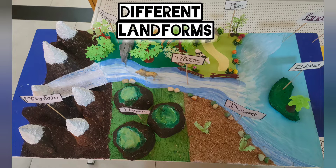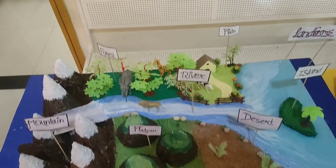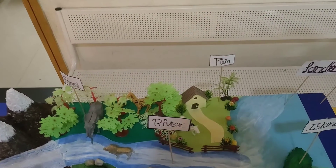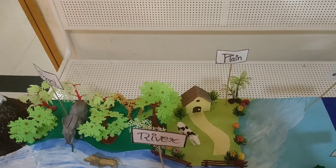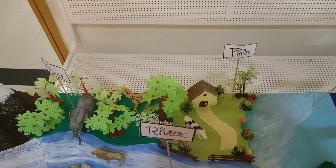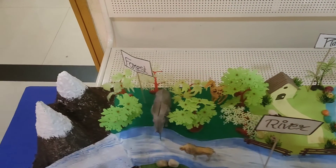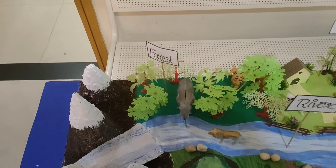Hello everyone, today we are going to see different kinds of landforms in this video. This is a model showing different kinds of landforms like mountains, forest, river, plain, island, and deserts. First of all, let us see mountains — these are landforms higher than the surrounding areas.